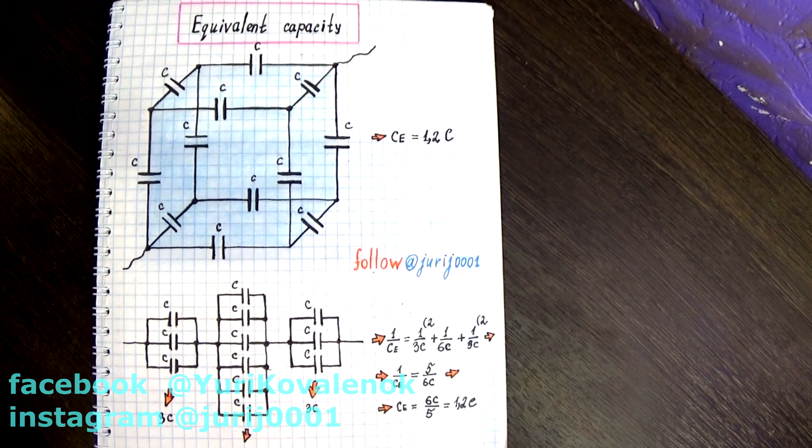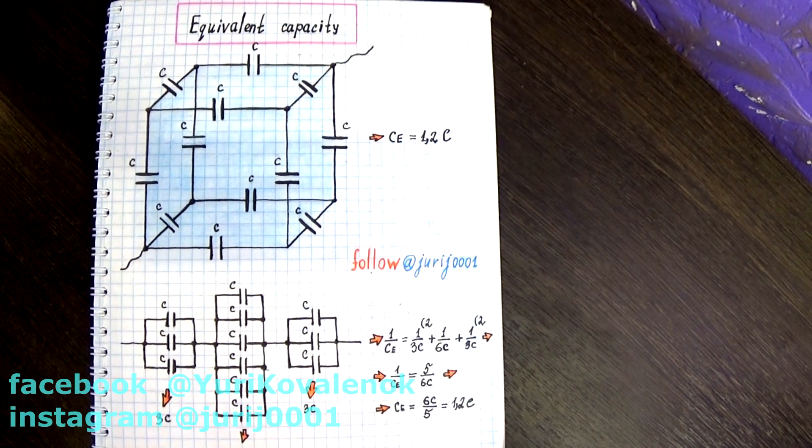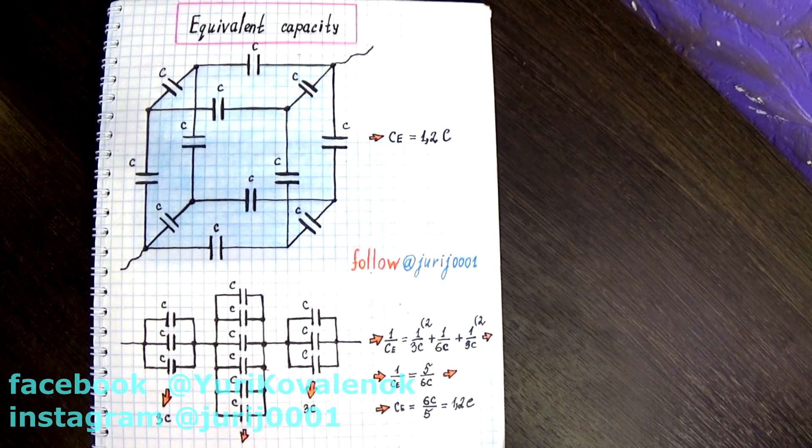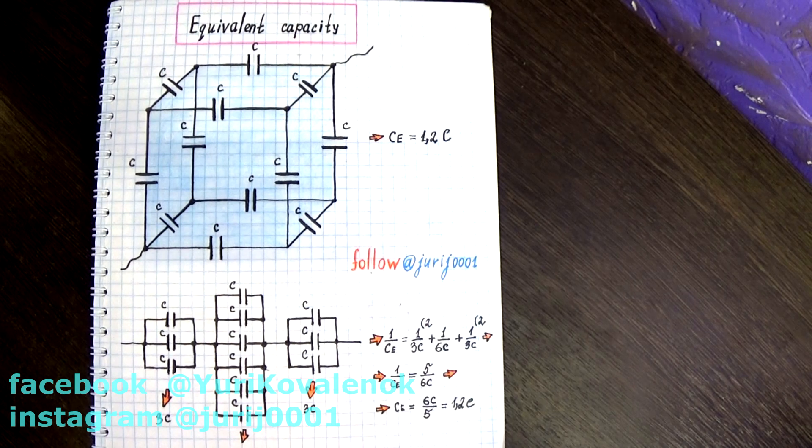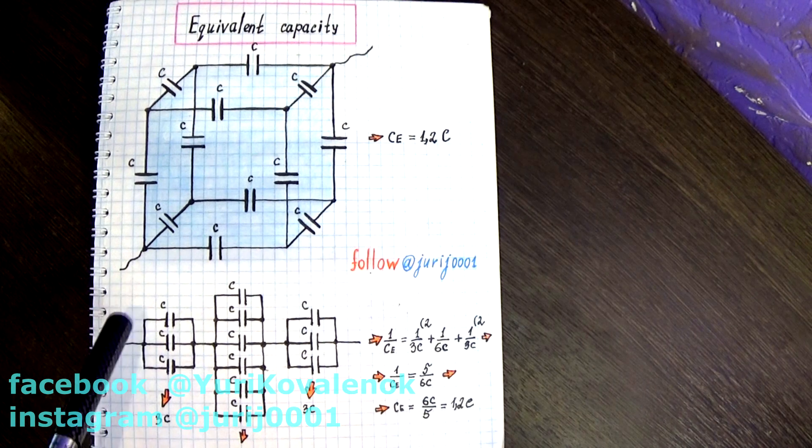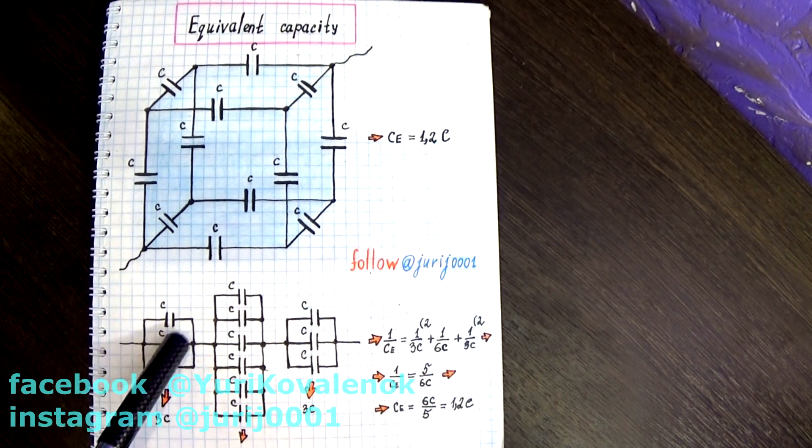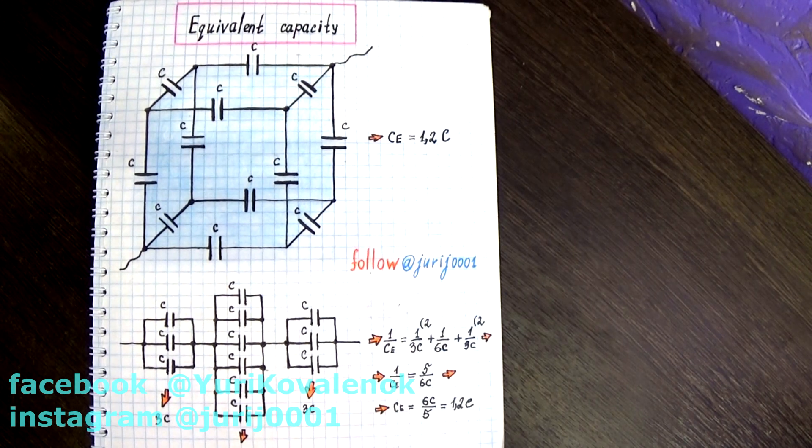A classic problem in electrical engineering. Mixed connection of capacitors. You need to transform this circuit, taking into account the fact that the electric current does not pass through the nodal points which have the same potential. As a result, you will get a simple circuit in which it is no longer difficult to determine the equivalent capacitance of the capacitor.